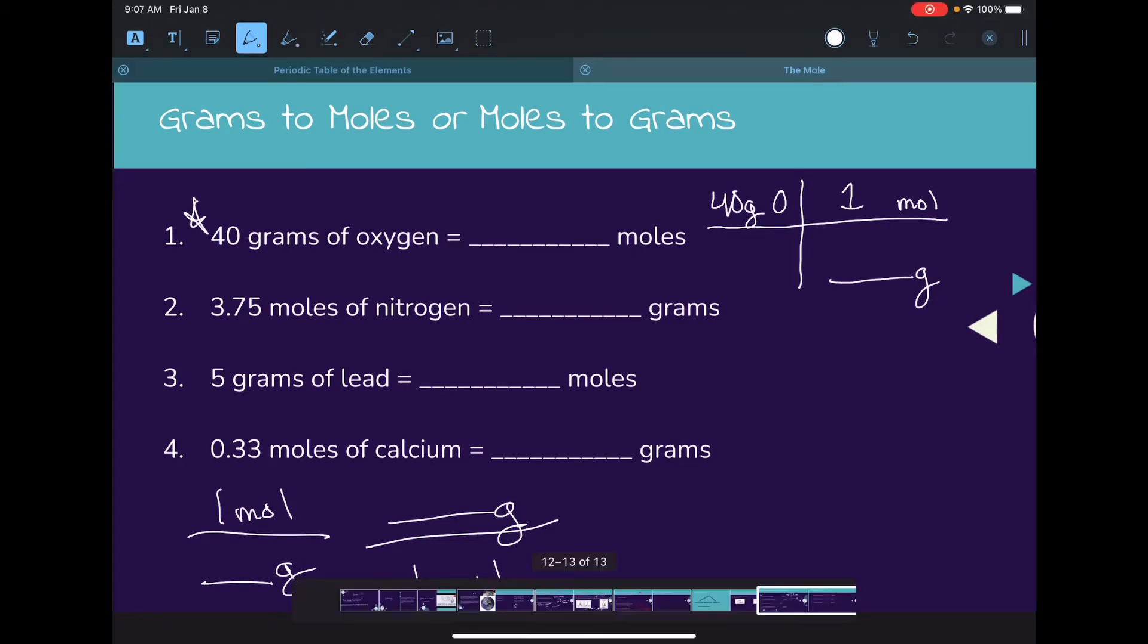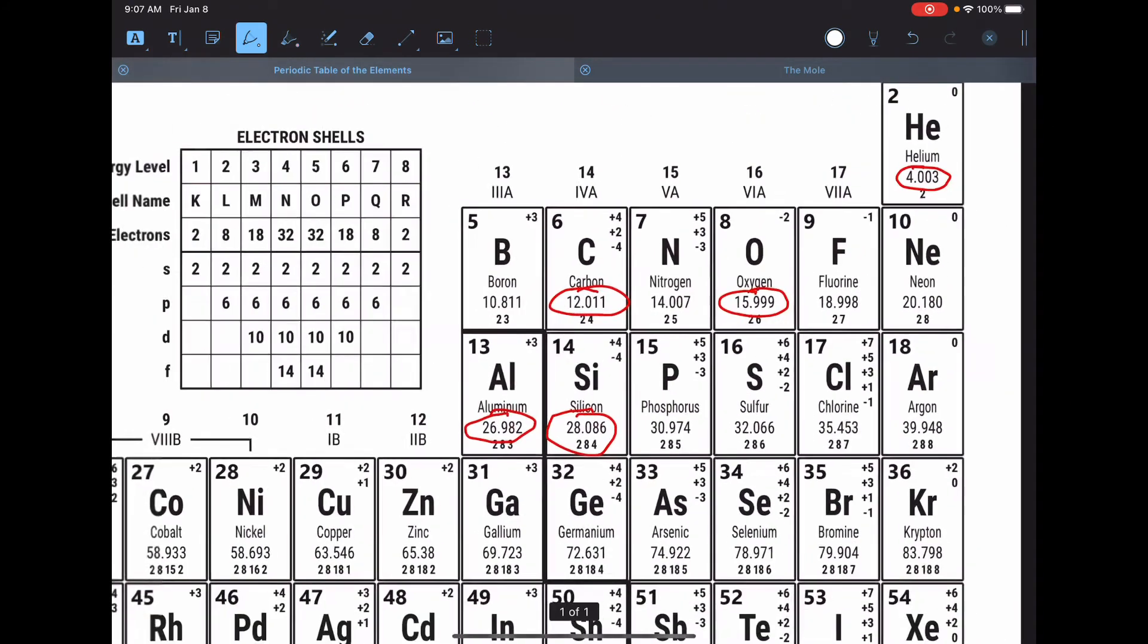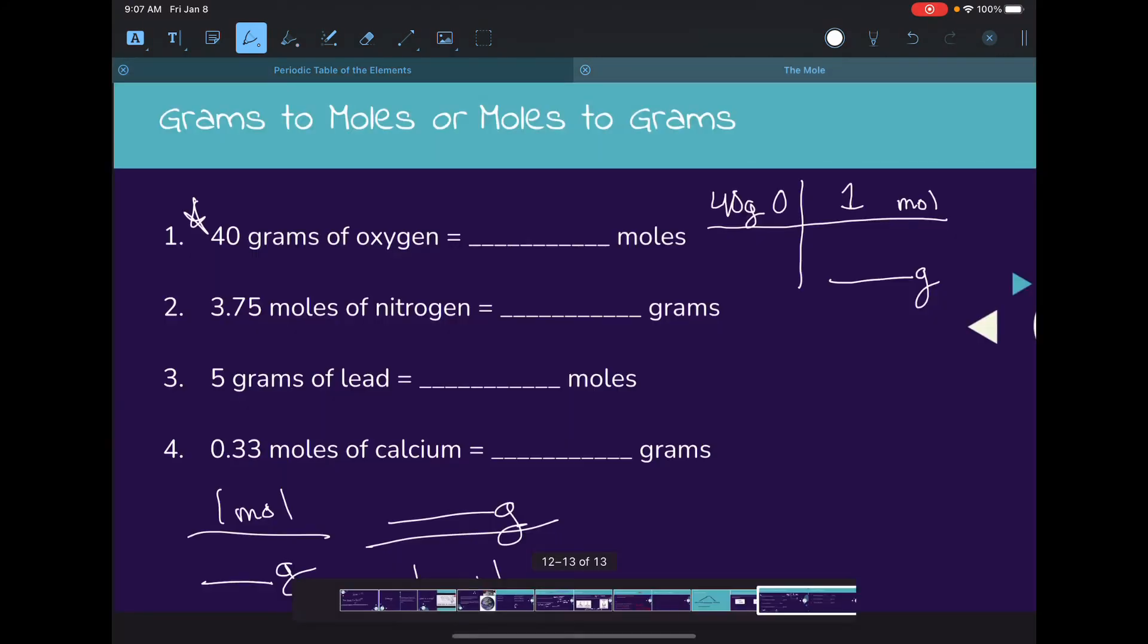Looking at the periodic table, oxygen is 15.999, so we'll put that right there. Our units will cancel out. We multiply across the top and divide across the bottom. This becomes 40 times 1 divided by 15.99, and plugging that into the calculator, our answer is about 2.5 moles.